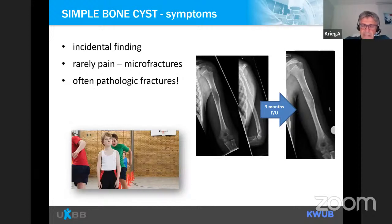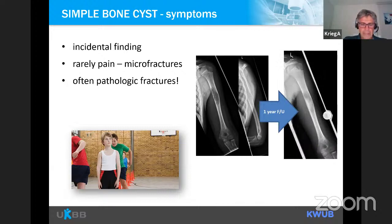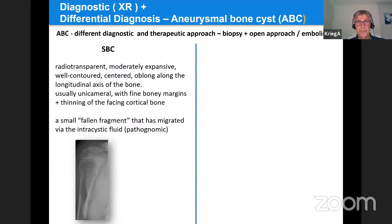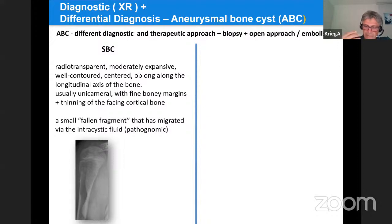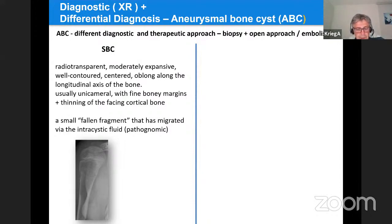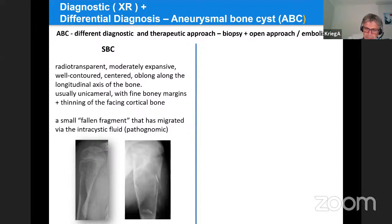Patients with simple bone cysts usually present with a pathological fracture; rarely with pain alone. Some patients are asymptomatic and discovered incidentally. On normal x-rays the cysts are located in the metaphyses of long bones — juxtaphyseal, radiotransparent, moderately expansive, well-contoured, centered along the longitudinal axis of the bone, usually unicameral with finely bony margins and thinning of the facing cortical bone. At fractures, they may show a small fallen fragment that has migrated via the intracystic fluid.